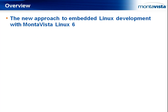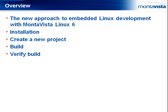My name is Troy Kitch and I'm here with Klaas van Gend. Today we'll demonstrate MonoVista Linux 6, the new approach to embedded Linux development. Klaas will begin with installing MonoVista Linux 6 and then create a new project. He'll build it, check the build after it's compiled to verify everything worked, and then deploy the project — all this under 10 minutes for a faster time to development.